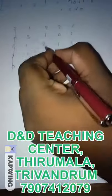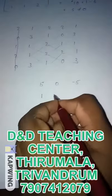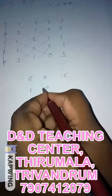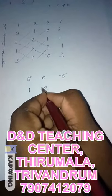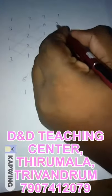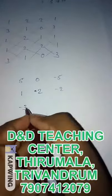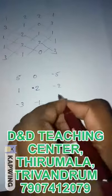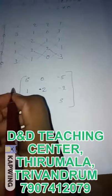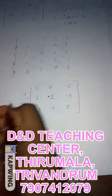Again, consider this section. 2 into 2 equals 4, minus 2 equals 2. Then minus 2. Again, consider this next section: 1, 2, 1, 2, giving a result of 2.